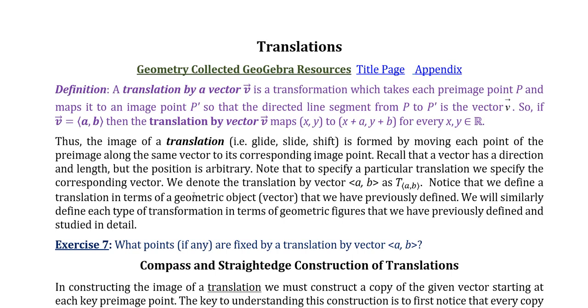So here's the first question. What points, if any, are fixed by a translation by the vector (a, b)? I'm going to let you answer that one on your own. Are any points left alone, or do they all move? And if any are fixed, which ones?